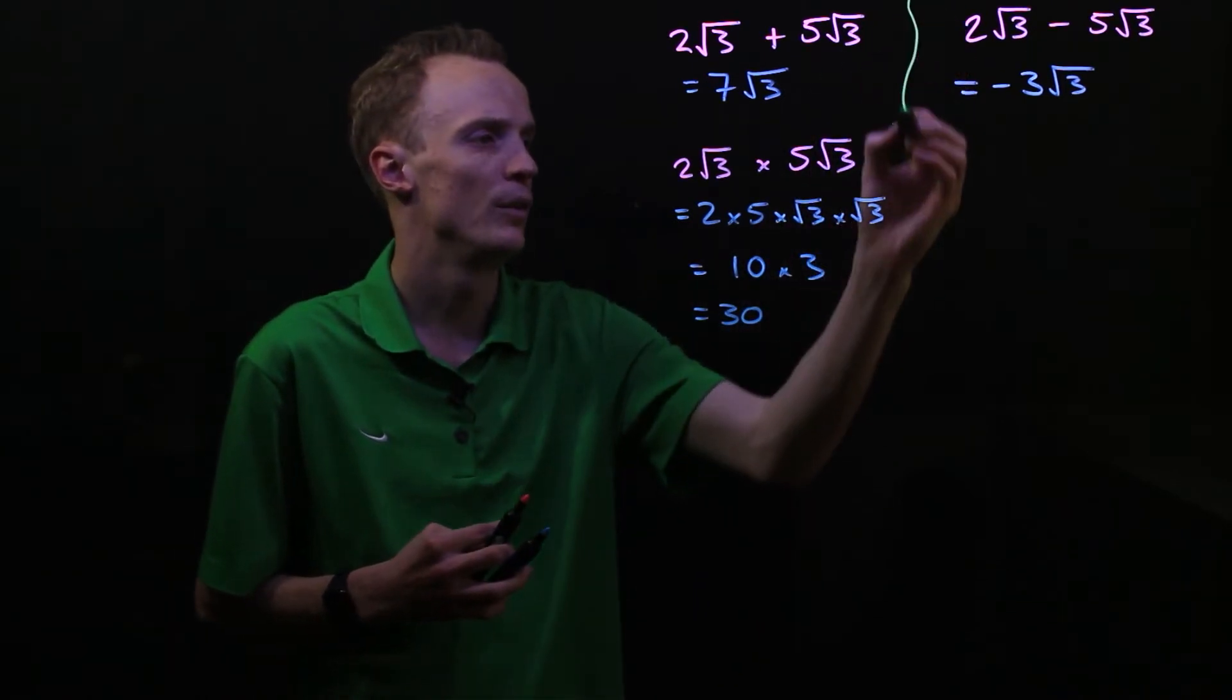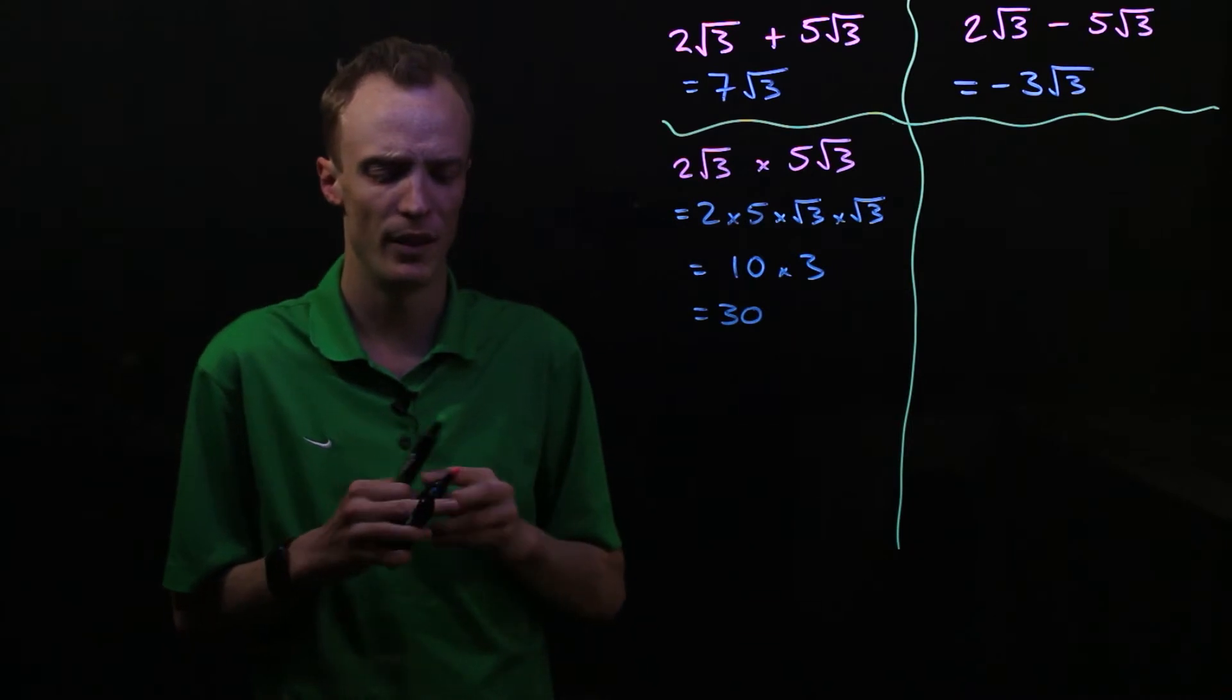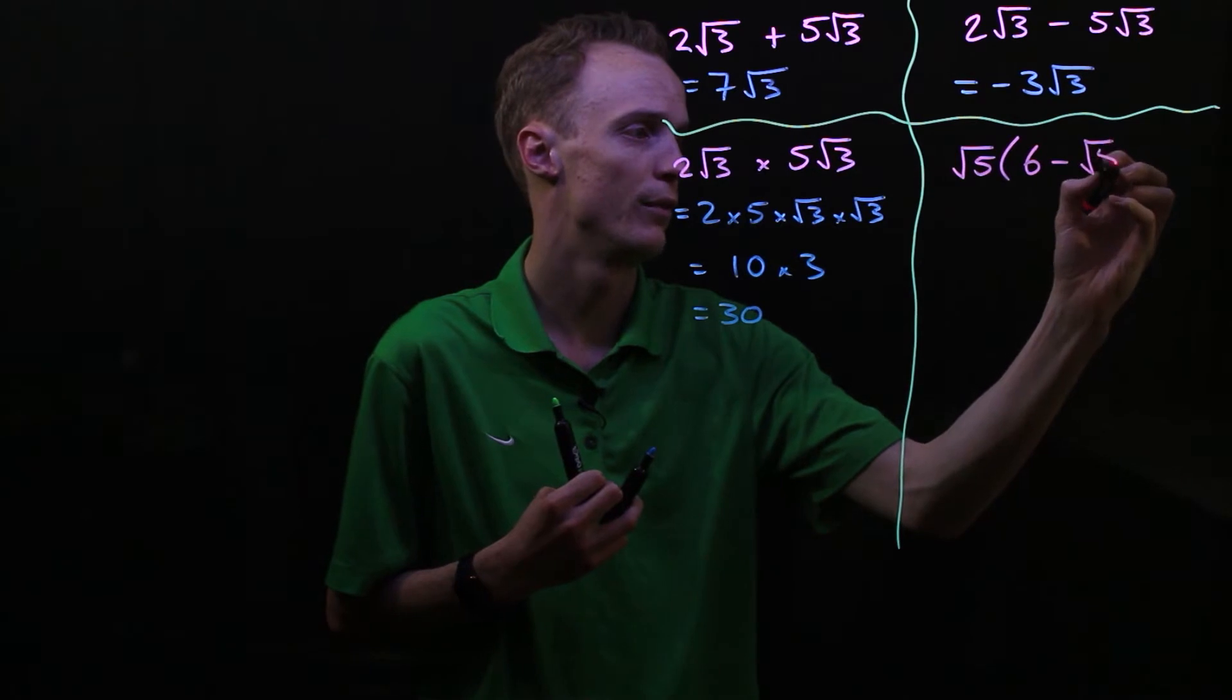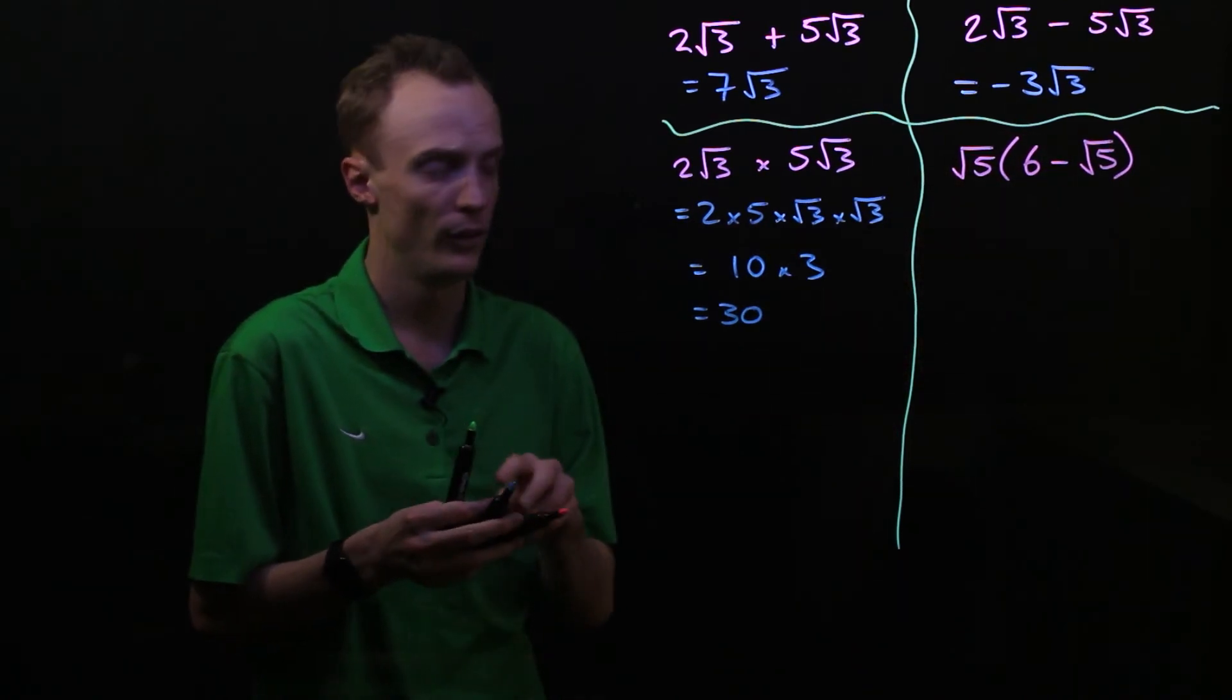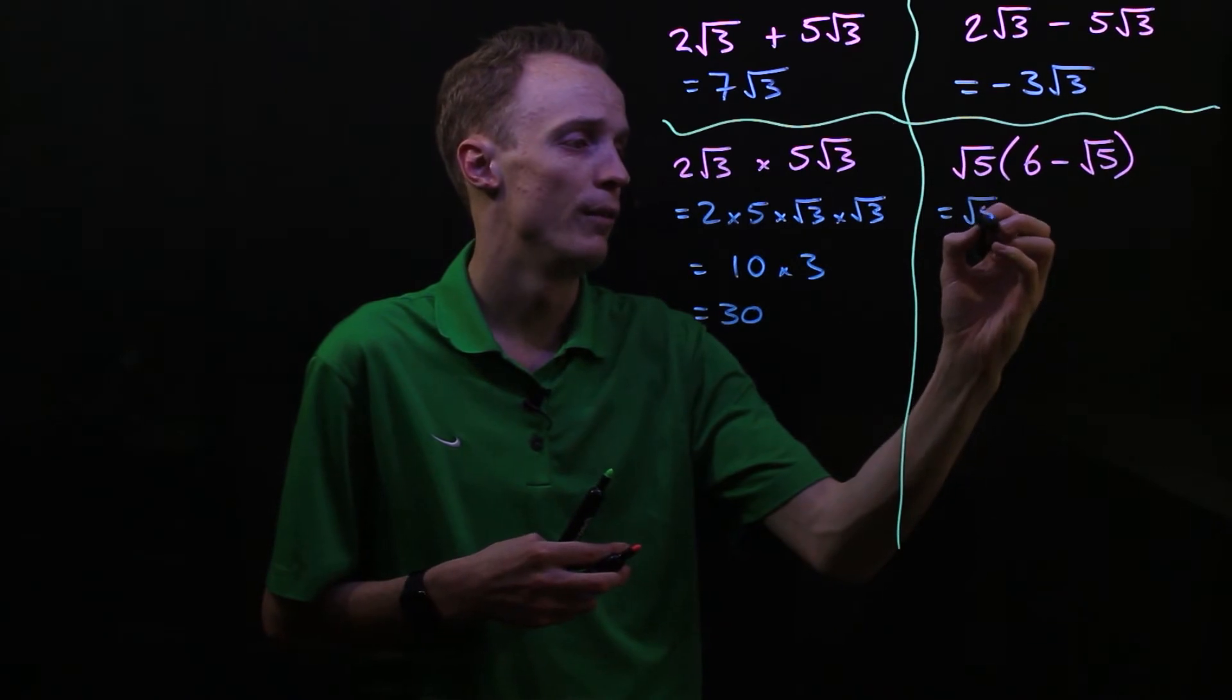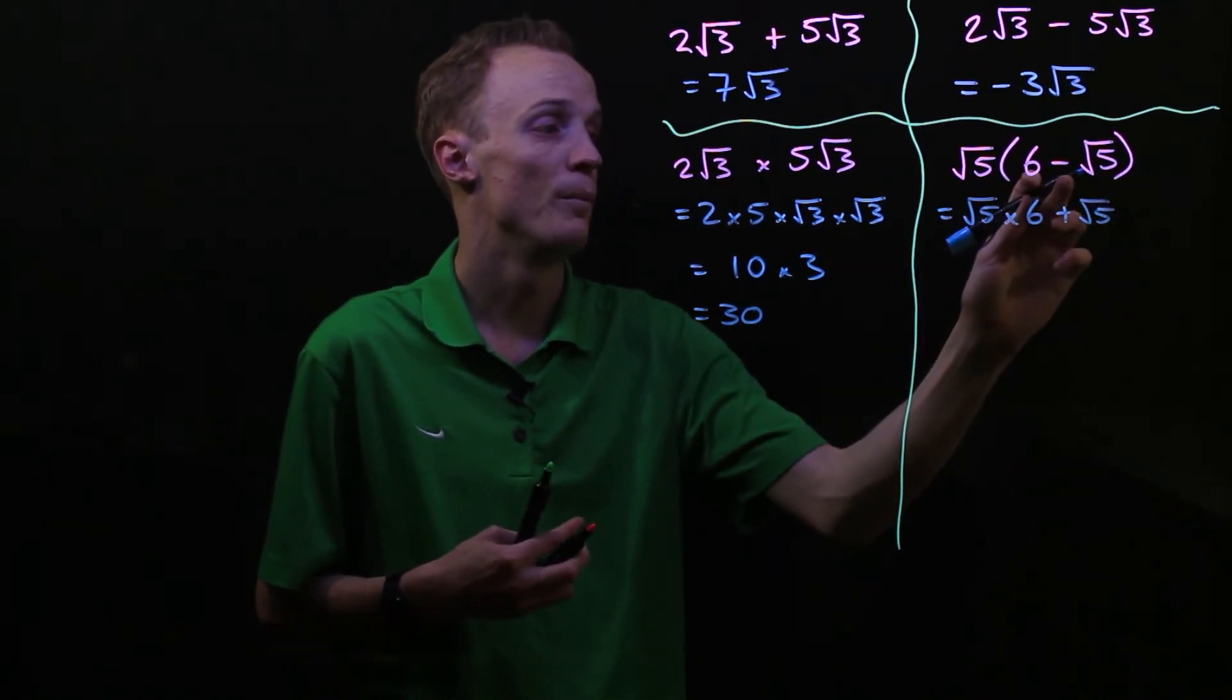We can take it one step further and start looking at expanding more complex equations. I'm going to look at what we would do if we had √5 multiplied by (6 - √5). Here we can use the distributive law to expand these brackets, so we'd be multiplying the √5 with every term inside the brackets. We'd be starting with √5 multiplied by that 6, and then adding on √5 multiplied by the second term, which is -√5.